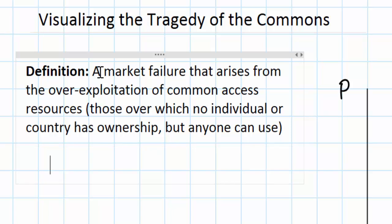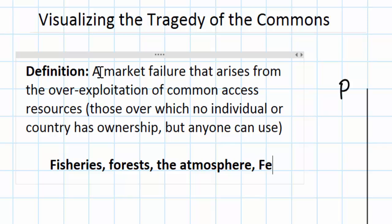Some examples of common access resources discussed in the previous lesson were fisheries, forests, the atmosphere. Some other examples could include fertile soil, minerals trapped in the ground, fossil fuels, and so on.